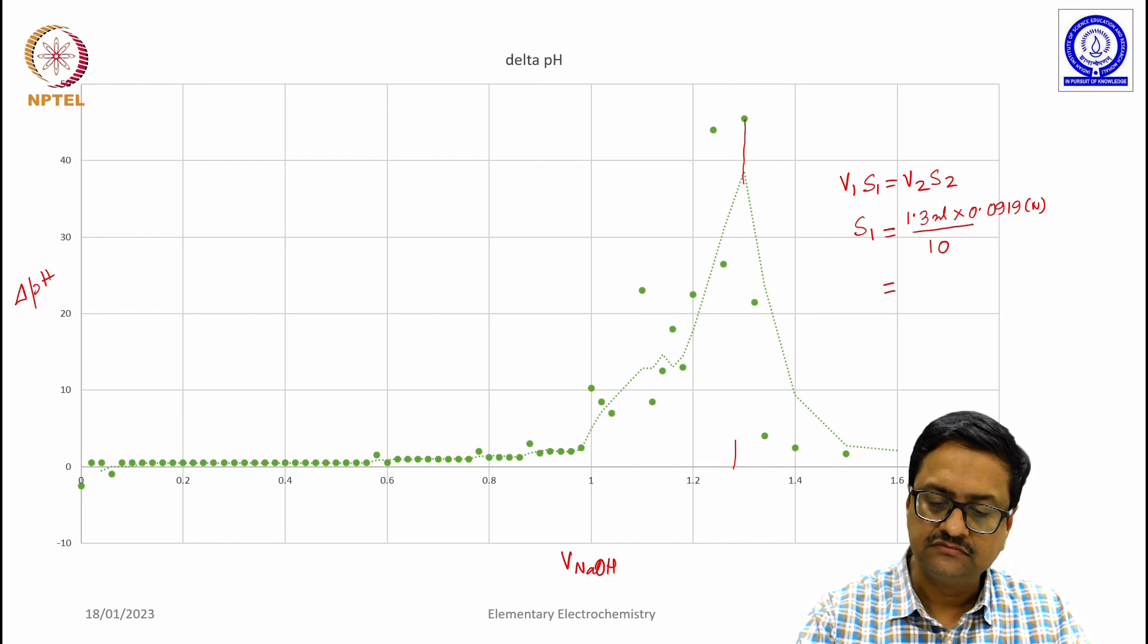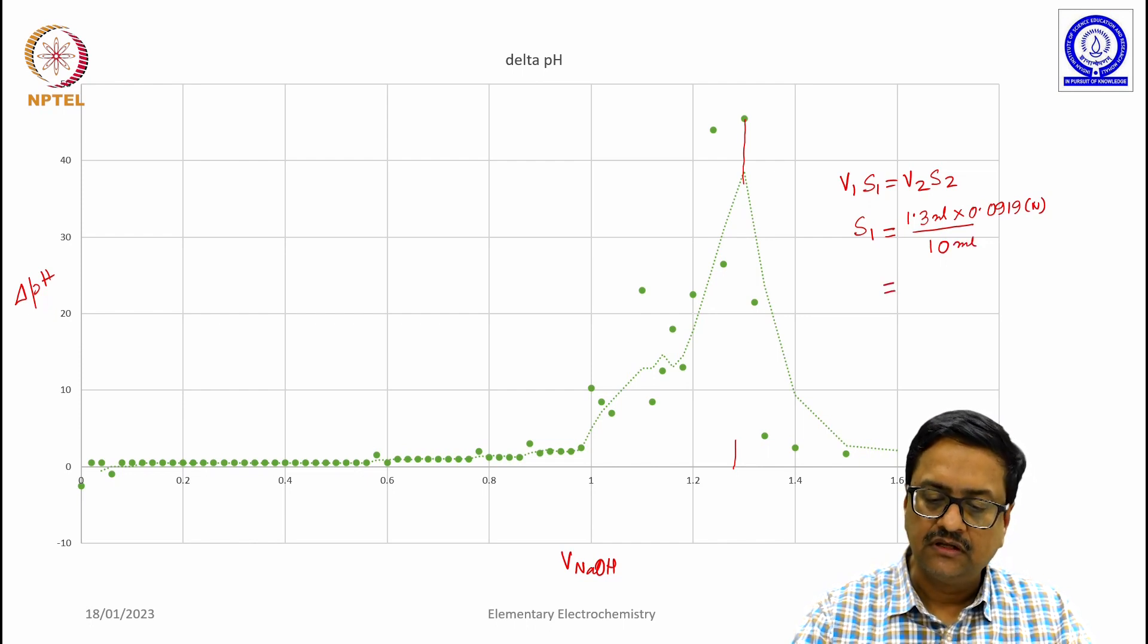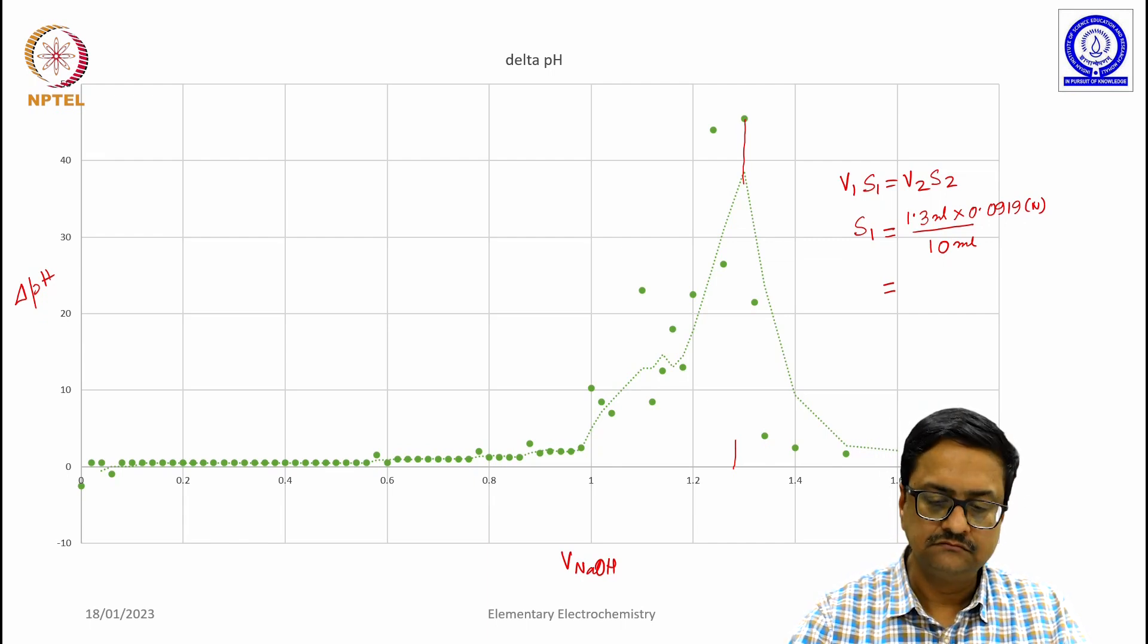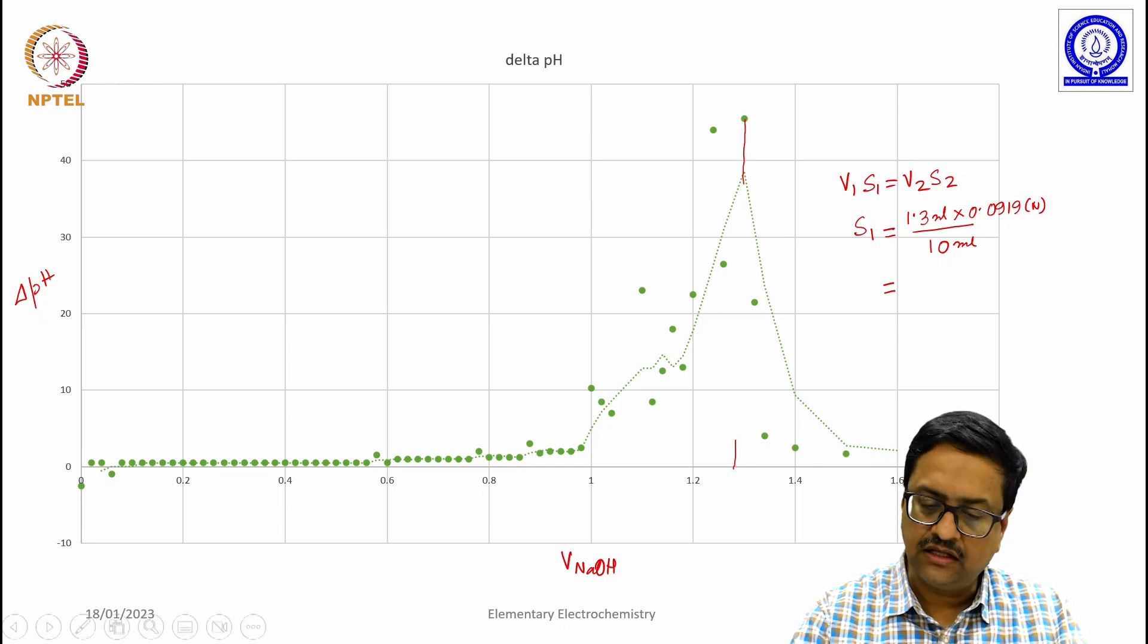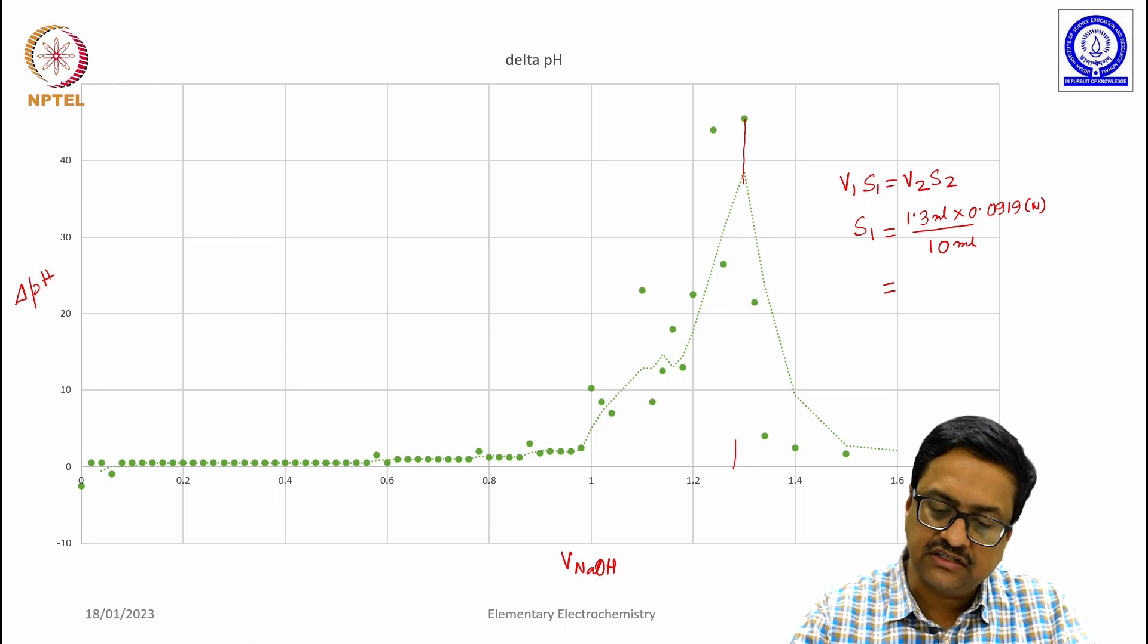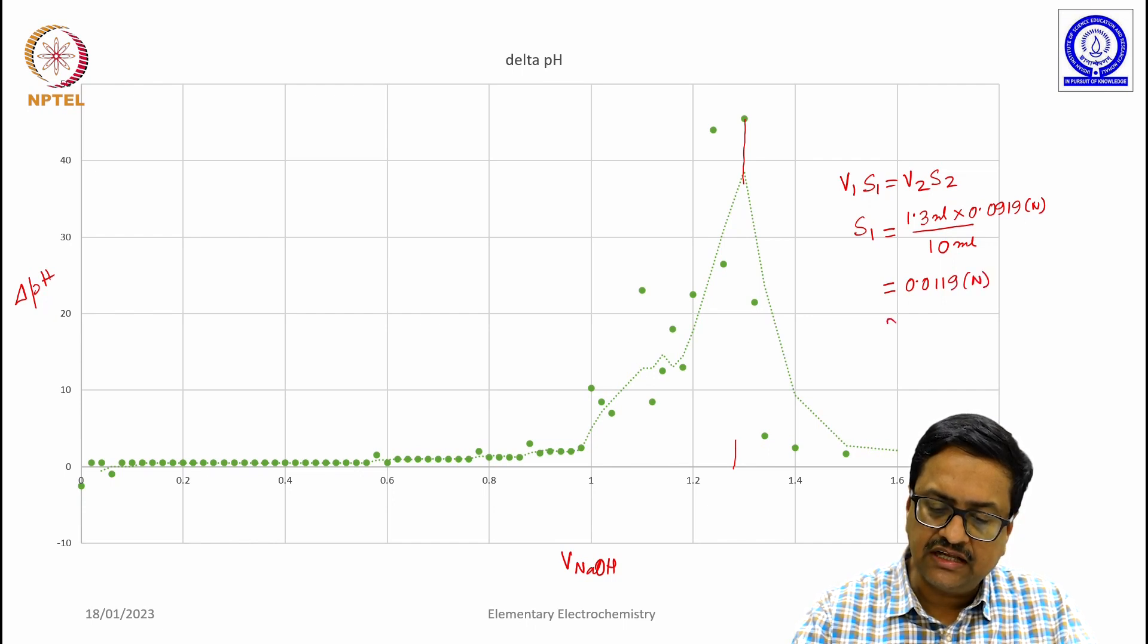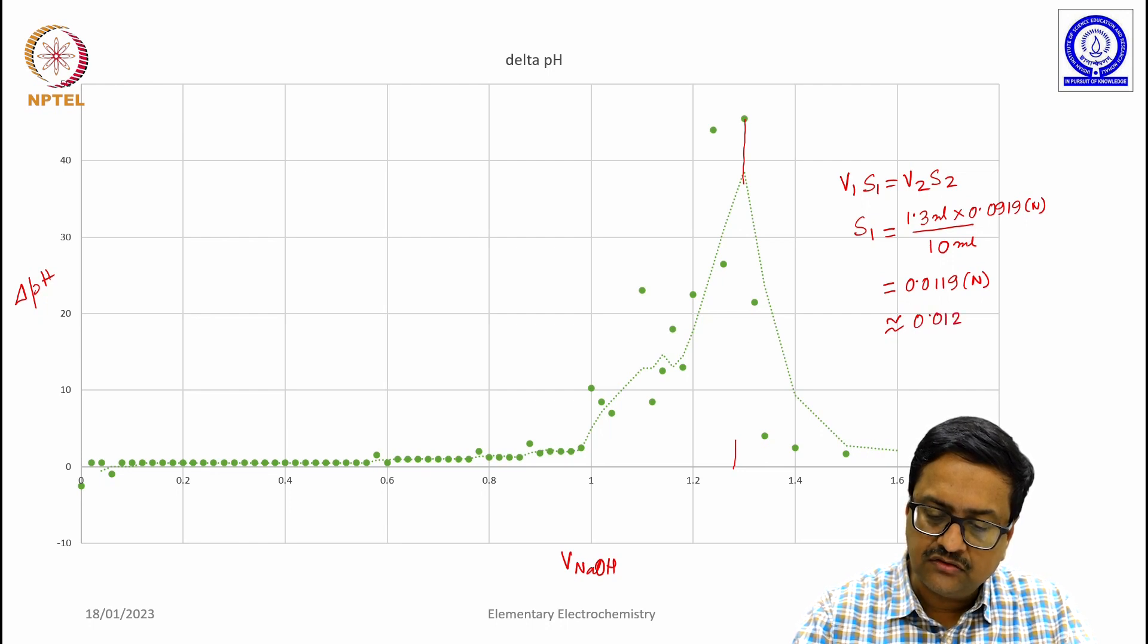Therefore, the concentration of this HCl solution turns out to be 0.0119 normal, which can be equated to 0.0120.